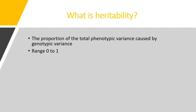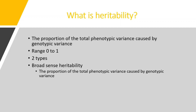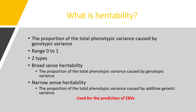If the heritability is near to 1, the trait is highly heritable. If the estimate is near to 0, the trait is very low heritable. There are mainly two types of heritability. The first is broad sense heritability, defined as the proportion of total phenotypic variance caused by genotypic variance — which includes additive genetic variance, dominance variance, and epistatic variance. The second is narrow sense heritability, defined as the proportion of total phenotypic variance caused by only additive genetic variance.